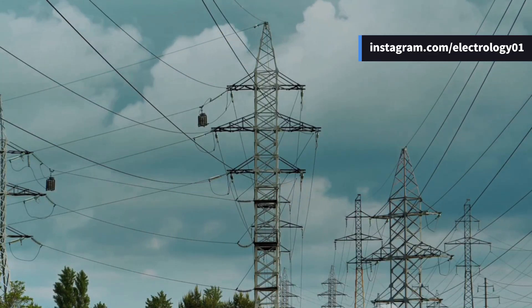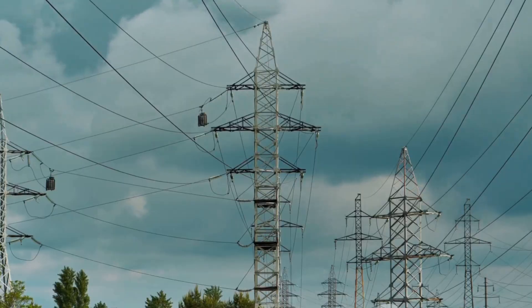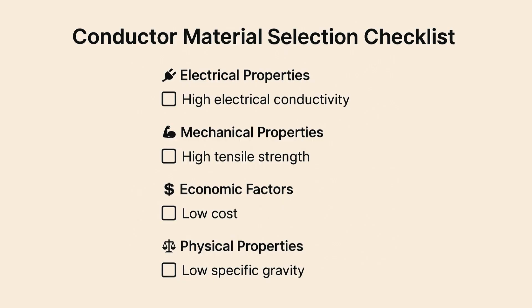For a material to be considered suitable for transmission and distribution of electric power, it should tick a few crucial boxes: it must have high electrical conductivity, strong tensile strength to endure mechanical stresses, be low in cost so it can economically cover long distances, and have a low specific gravity to keep the weight in check. But no single material satisfies all these conditions perfectly, so we always need to compromise between cost and the desired electrical and mechanical properties.